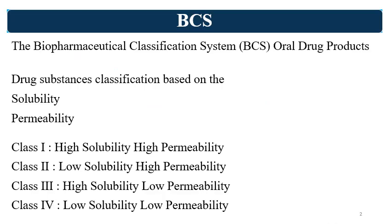For BCS, oral bioavailability and permeability are considered. The solubility and permeability of the molecule determines its BCS class. The BCS classification of drug substances or APIs is based on solubility and permeability. This solubility is specifically BCS solubility — it is not equilibrium solubility or saturation solubility. So you can classify the drug substance based on solubility and permeability.